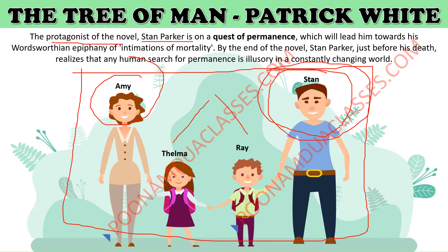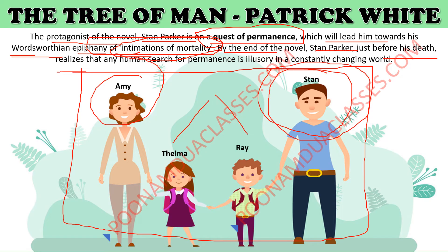The protagonist Stan Parker is on a quest for permanence, which leads him toward a Wordsworthian epiphany — Intimations of Mortality. Just as Wordsworth realized that all human beings are mortal and immortality is not possible, Stan also realizes that permanence is not possible. By the end of the novel, just before his death, Stan Parker realizes that any human search for permanence is illusory — the environment changes, people change, and the world remains in constant change.